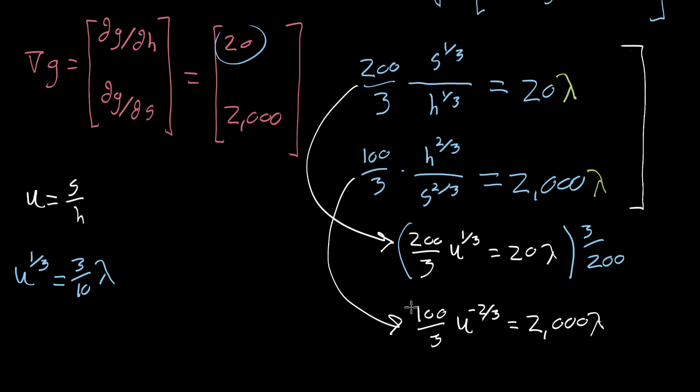And then similarly over here, I'm gonna take this whole equation and multiply it by three over 100. And what that's gonna leave me with is that U to the negative two thirds, U to the negative two thirds is equal to, let's see, this 2,000 when we divide by 100 becomes 20, and that 20 times three is 60. So that'll be 60 times lambda.